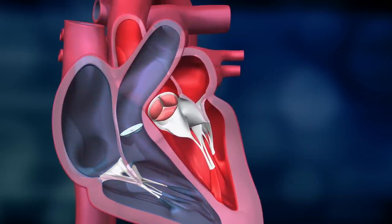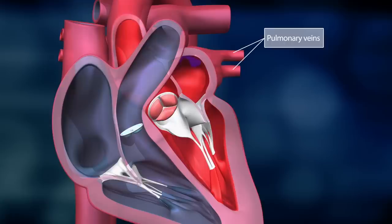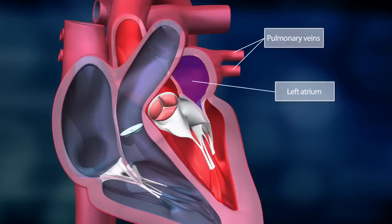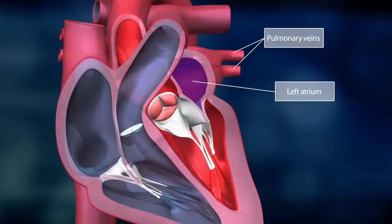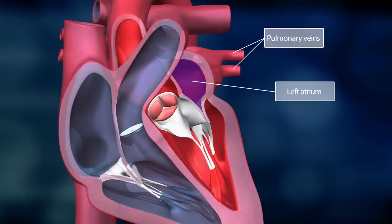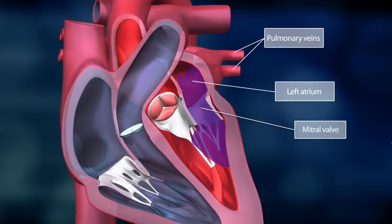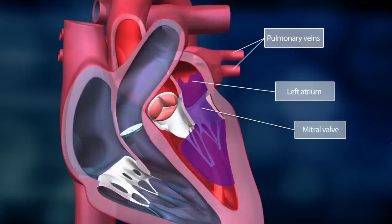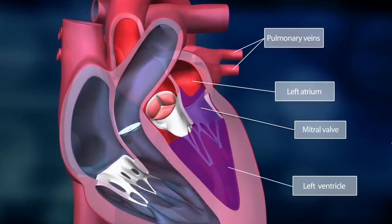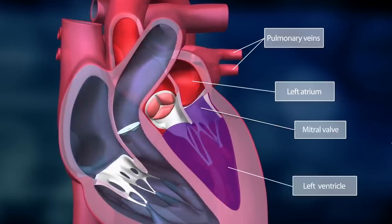Oxygen-enriched blood then returns from the lungs through the pulmonary veins and fills the heart's left atrium. The left atrium contracts, the mitral valve opens, and blood is pumped into the left ventricle.